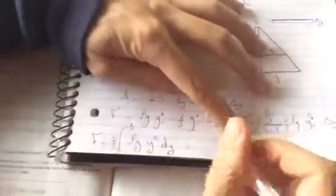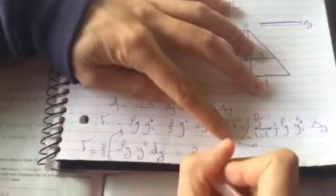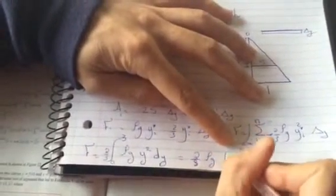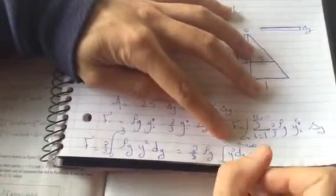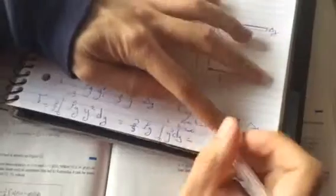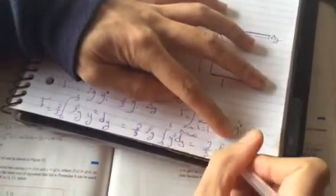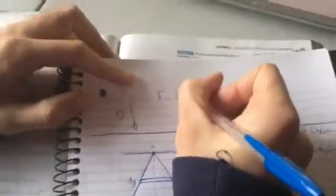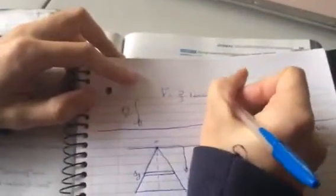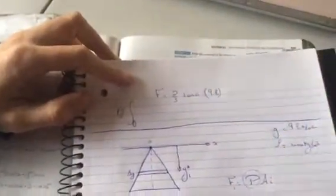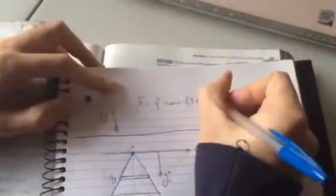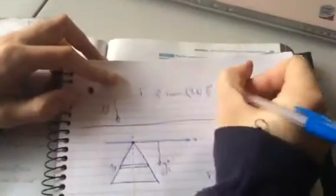And rho and g are constants, so we could pull this out. Rho g, y squared dy from 0 to 3, and the integral of y squared is y cubed over 3, from 0 to 3. From 0 to 3, I will continue the problem up here because I ran out of space. So f will be 2 thirds, rho is the density of water is 1,000, gravity is 9.8, y, we're evaluating from 3, so 3 cubed over 3 minus 0, because when y is 0 the whole thing goes to 0.